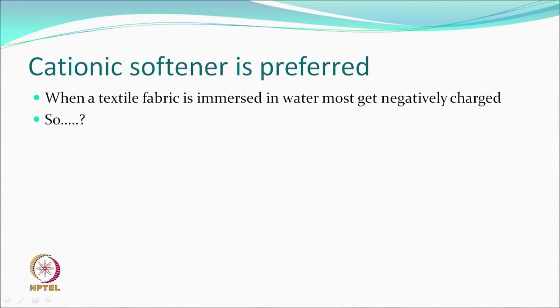Why are they substantive? During dyeing or other wet chemical processing, whenever you immerse a textile fabric in water, it assumes a certain amount of negative charge. If the fabric surface has a slight negative charge, then a positive cation or cationic compound like a cationic softener would obviously be attracted towards the surface. So it becomes substantive, and because of that the fastness properties are pretty good.